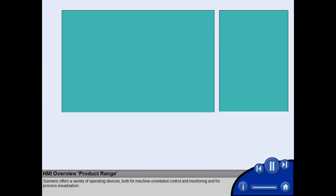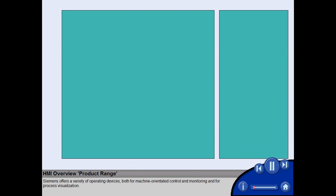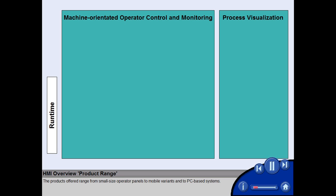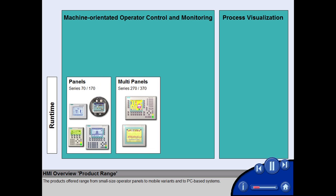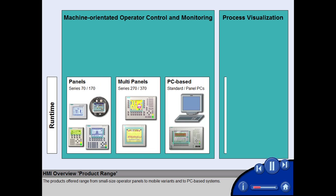Siemens offers a variety of operating devices both for machine-orientated control and monitoring and for process visualization. The products offered range from small size operator panels to mobile variants and to PC-based systems.